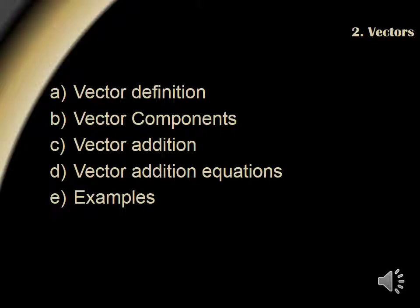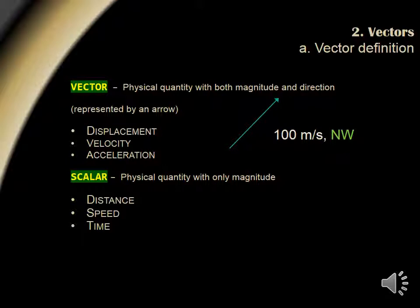Let's move forward and begin talking about vectors. We'll cover the definition of a vector, vector components, addition, discuss some equations, and do some examples. A vector is a physical quantity with both magnitude and direction. Some examples of how to express a vector in terms of velocity would be 100 meters per second northwest.